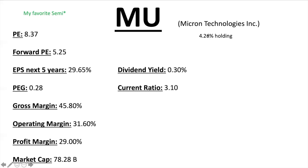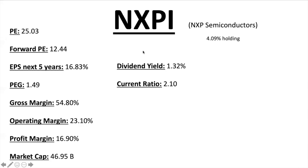My favorite semiconductor play is Micron Technologies, ticker MU, with just over 4% holding in the ETF. PE ratio 8.37, Forward PE 5.25 — fantastic numbers. EPS for the next five years 29.65% — also fantastic. PEG ratio 0.28 — the best of all semiconductors I've gone through so far. I own it in my Roth IRA. Gross margin, operating margin, and profit margin all very good — profit margin just under 30%. Market cap $78.28 billion, small dividend that'll increase over the years, current ratio 3.10.